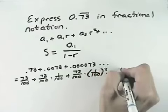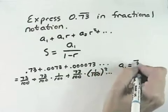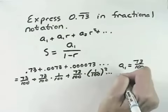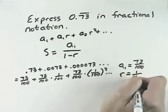That means our first term is 73 over 100, and our common ratio is 1 over 100.